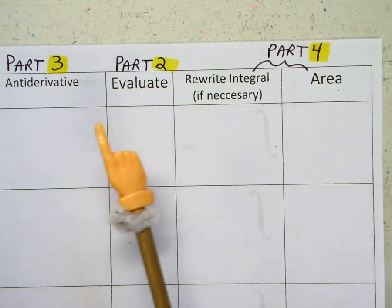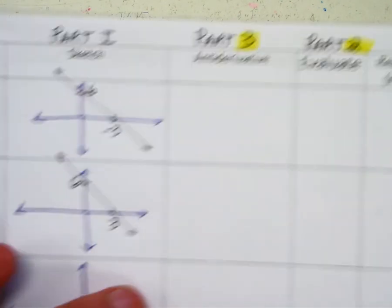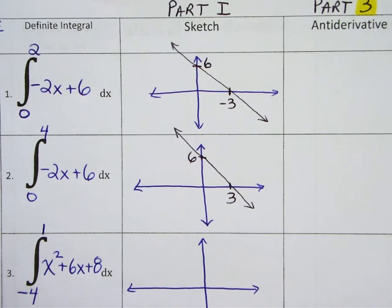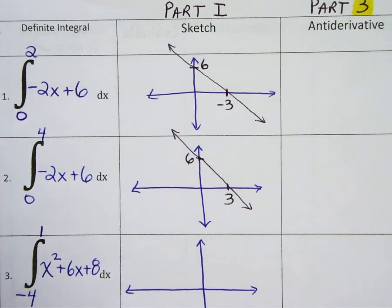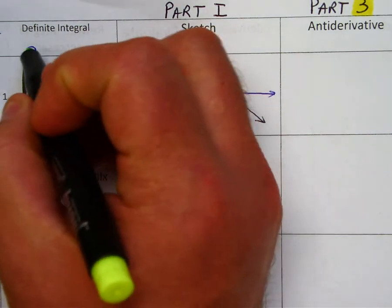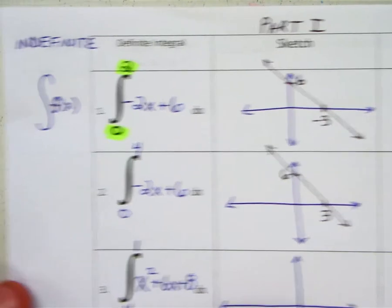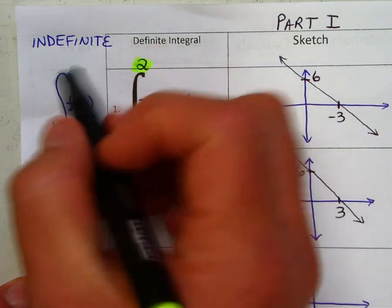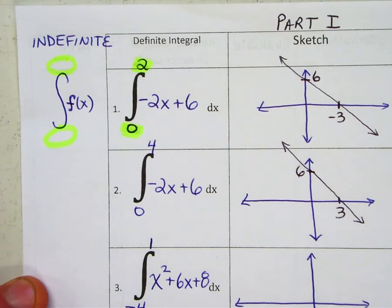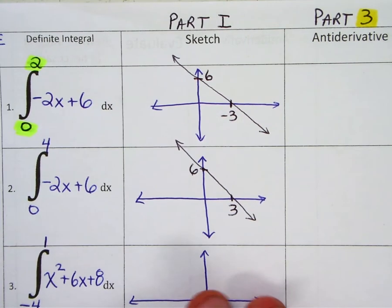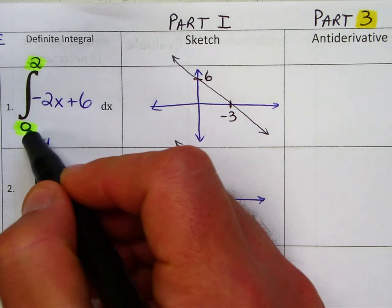So first thing in this first video, there's something called a definite integral. All a definite integral is, is it has what's called an upper bound and a lower bound. An indefinite integral will not have that. It will just be blank up here. So a definite integral has a specific upper bound and a lower bound.